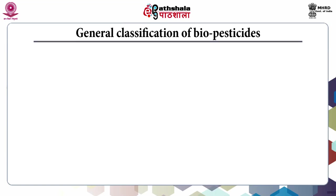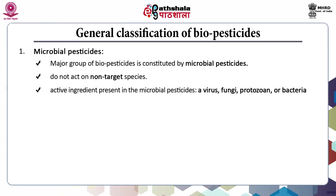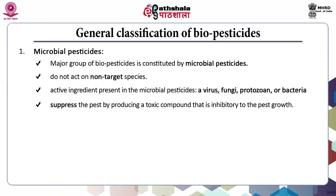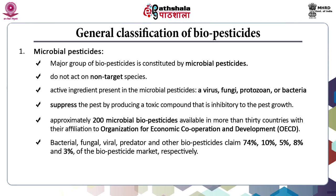Coming to the general classification of biopesticides, the first class is microbial pesticides. Major group of biopesticides is constituted by microbial pesticides. They do not act on non-target species and the active ingredient present in microbial pesticides can be a virus, fungi, protozoan or bacteria. They suppress the pest by producing a toxic compound that is inhibitory to pest growth. Approximately 200 microbial biopesticides are available in more than 30 countries with affiliation to OECD. Bacterial, viral, fungal, predator and other biopesticides claim 74%, 10%, 5%, 8% and 3% of the biopesticide market respectively.